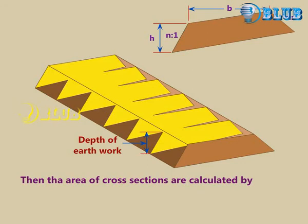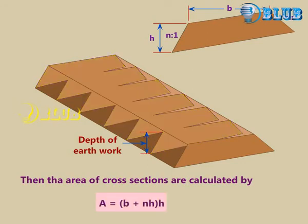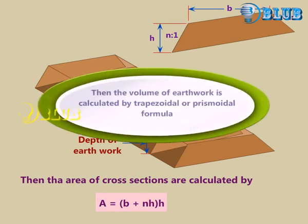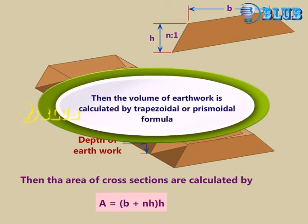The area of cross sections are calculated by A equals (b plus nh) into h. Then the volume of earth work is calculated by the trapezoidal or prismoidal formula.